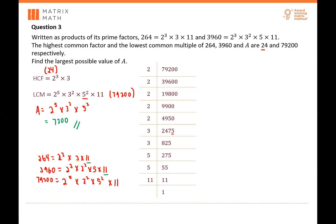This question takes some analysis — you have to compare prime factors and see what makes sense. 2⁵ comes from the LCM requirement. 3² is the larger power between 264 and 3960. 5² must come from A since the LCM requires it. And no 11, because 264 and 3960 already share 11, which would change the HCF.